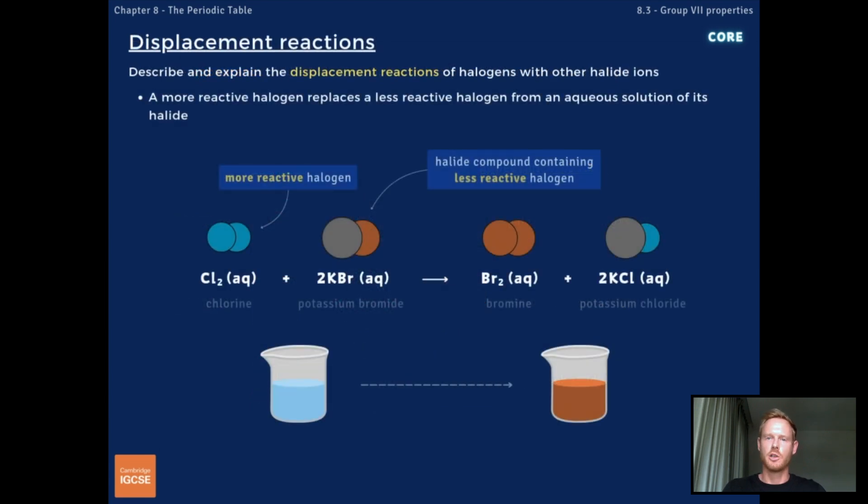A halogen displacement reaction is when a more reactive halogen replaces a less reactive halogen from its compound when in aqueous solution. After a displacement reaction, the less reactive element is pure and uncombined. For example, chlorine is more reactive than bromine, so chlorine displaces bromine from an aqueous solution of potassium bromide. The solution turns orange as bromine is formed.